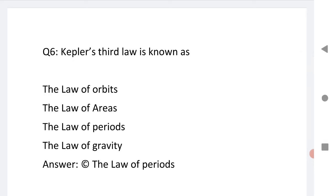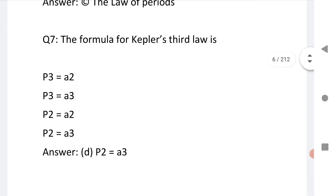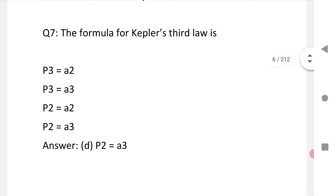Sixth question: Kepler's third law is also known as law of periods. Next, Kepler's third law, the formula: that is P square equals to A cube.